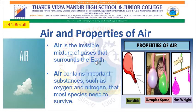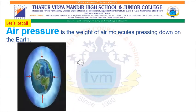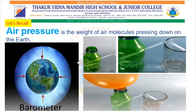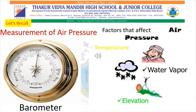As we have already seen, air is an invisible mixture of gases that surrounds the earth, which includes nitrogen and oxygen that most species need to survive. Some properties of air we have covered: air is invisible, has weight, and occupies space. Air pressure is the weight of air molecules pressing down on the earth's surface. We can measure air pressure with the help of a barometer, and altitude and temperature of the region are factors that affect air pressure.